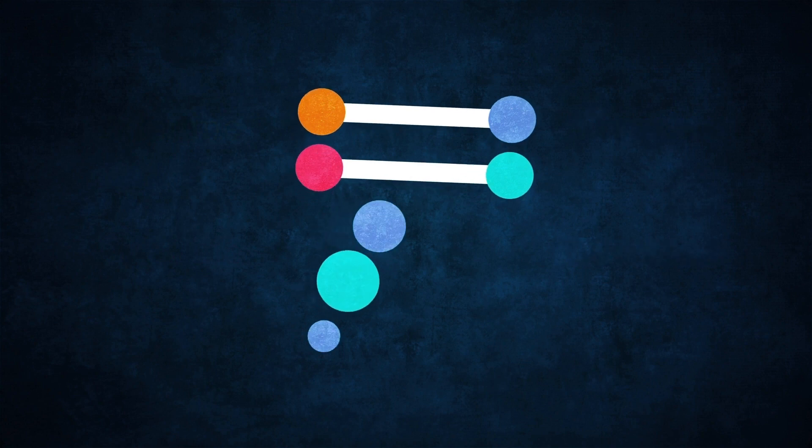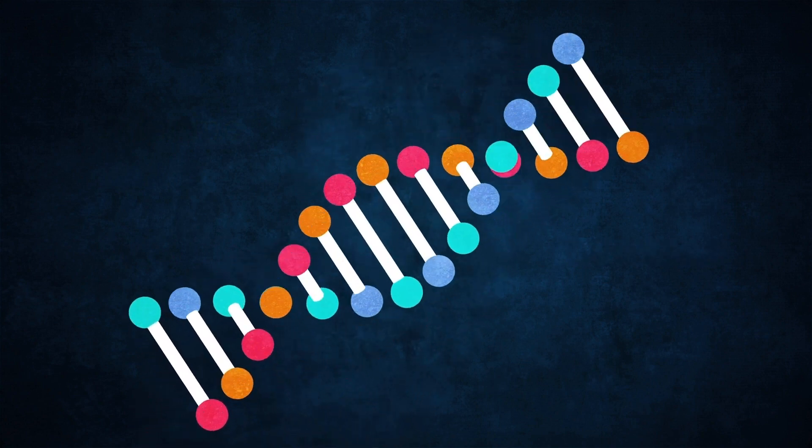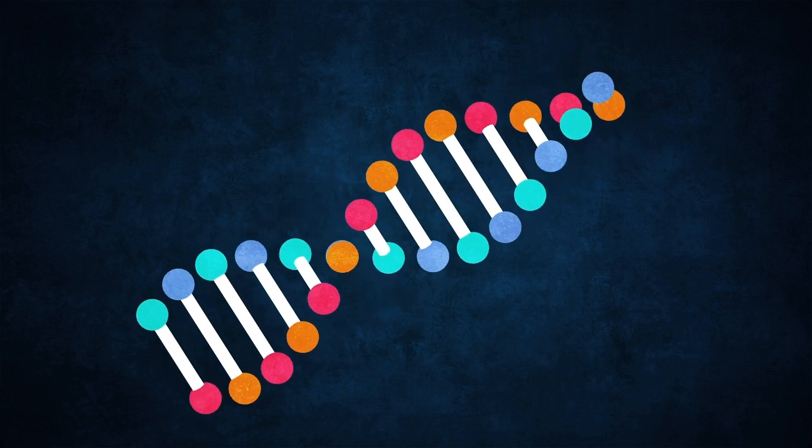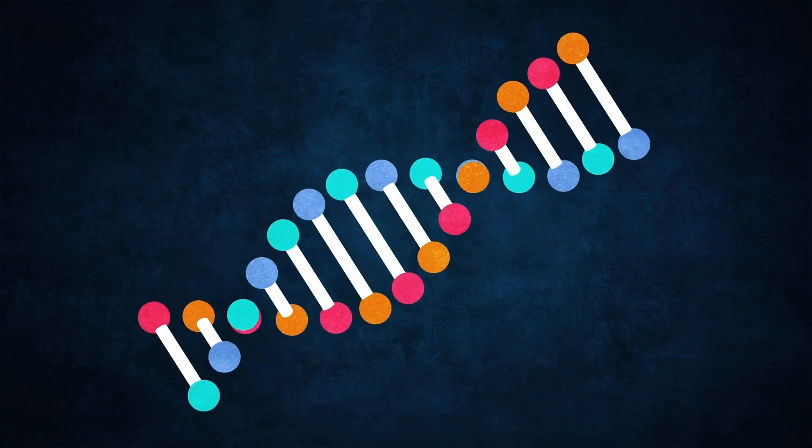The order that these bases appear in your genetic code determines everything about us, genetically speaking anyway. So your eye color, how tall you're likely to be, whether we're susceptible to certain diseases, it's all written in the base pairs in our genetic code.